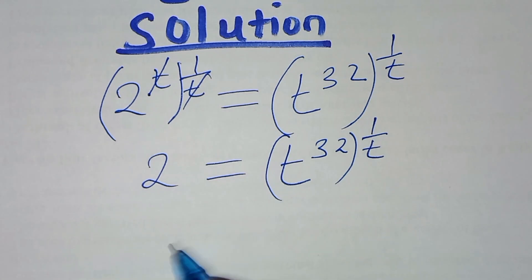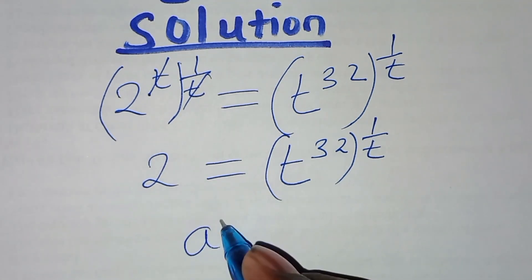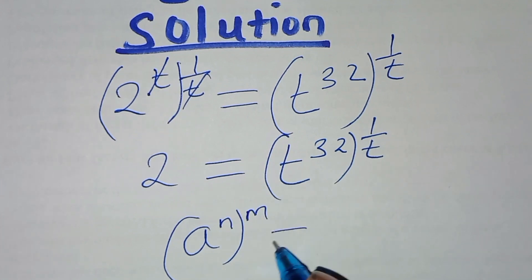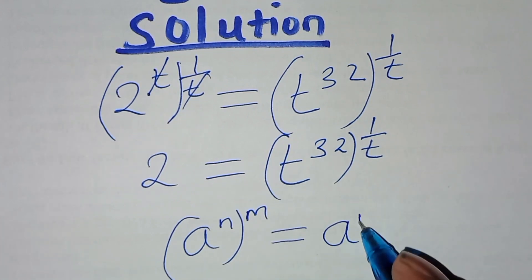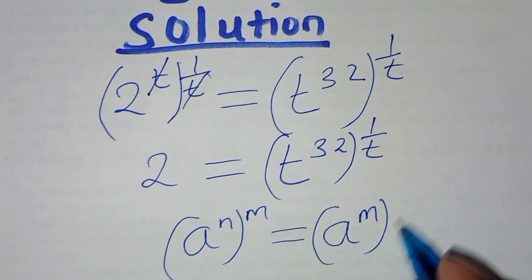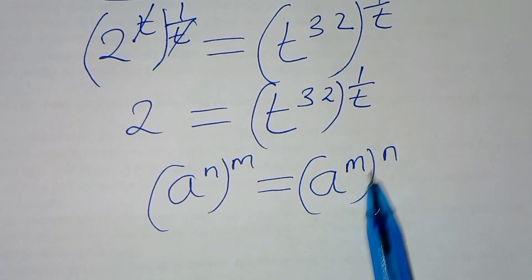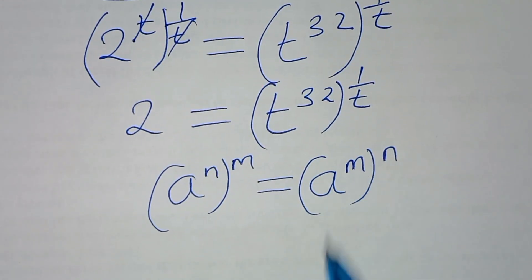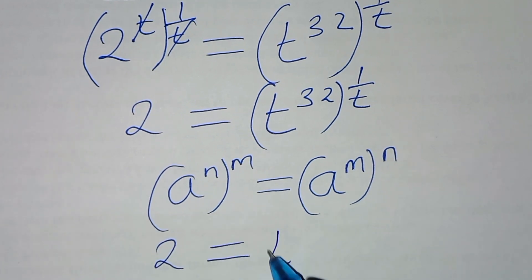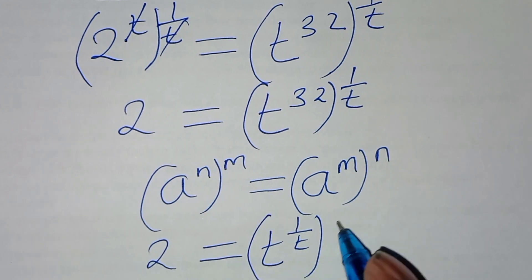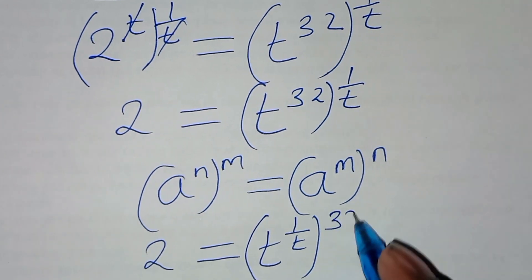Now, following the indices identity that a to the power n, raised to the power m, can be expressed as a to the power m raised to the power n, let's apply this identity. So here we have 2 is equal to t to the power 1 over t, raised to the power 32.